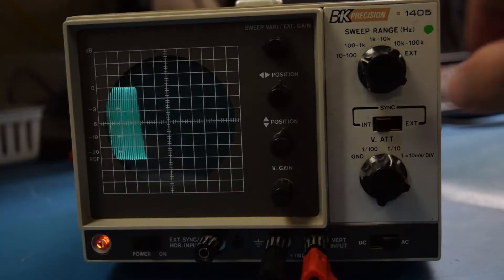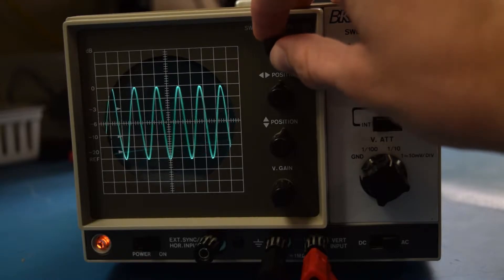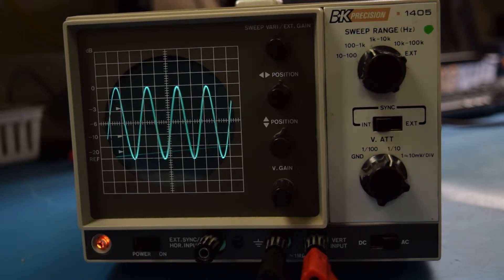So the oscilloscope that Jesse and I are using in this video is a BK Precision 1405 oscilloscope. This oscilloscope, in my opinion, is like a bare-bones oscilloscope. It doesn't even have a trigger function. It's an older model, and it uses a cathode ray tube as a display.